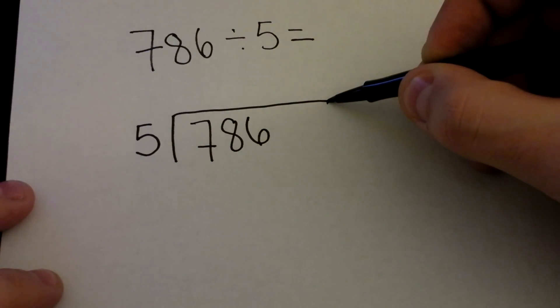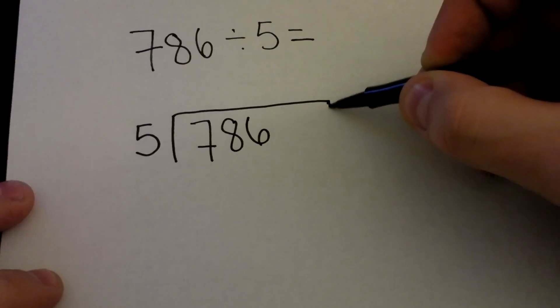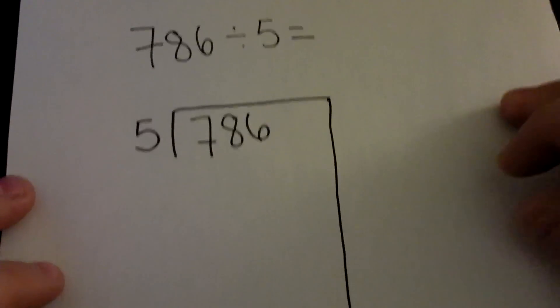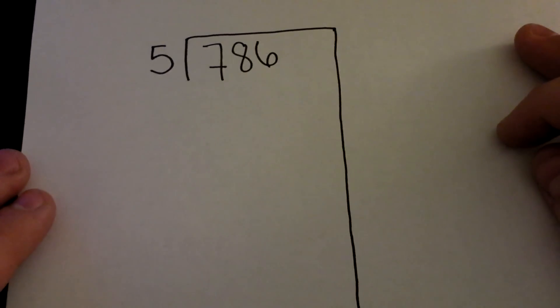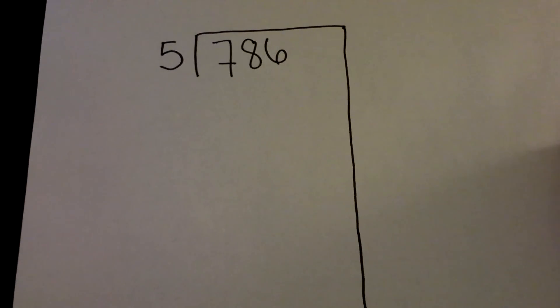Now here's where things get a little bit different from the traditional method. We're going to draw a line down the right side. What this is going to do is separate the amount of groups that we've taken out and the number of items that we still need to take out.